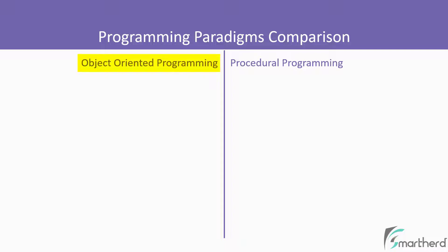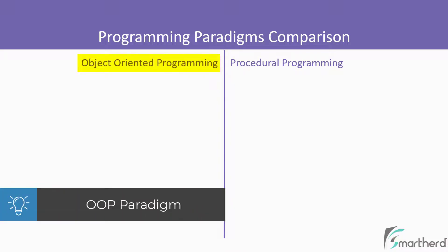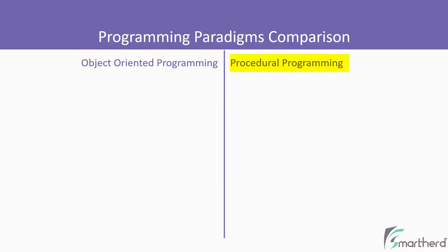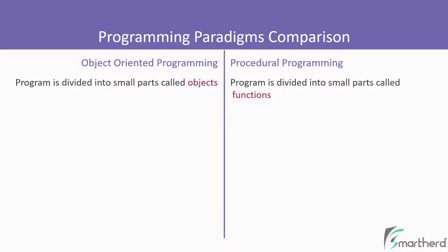On the left we have object-oriented programming — for simplicity, I will call it the OOP paradigm. And on the right we have the procedural programming paradigm. In the case of OOP paradigm, the program is divided into small parts known as objects. But on the other side, the program is divided into small parts called functions. This is one of the significant differences between these two paradigms.